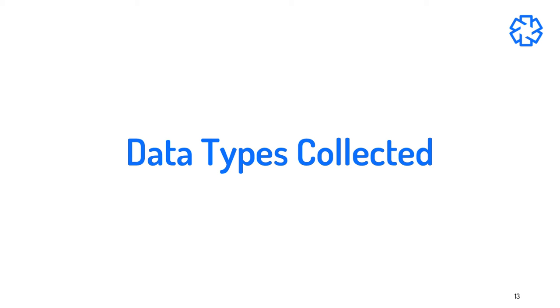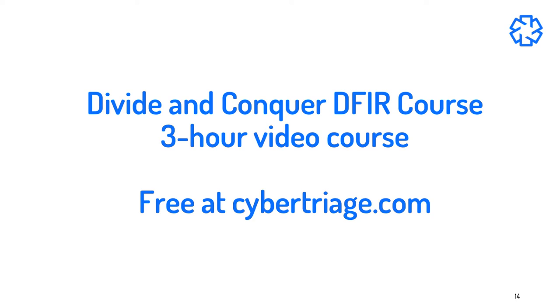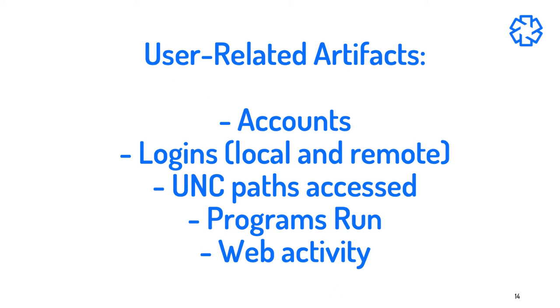It's critical for a responder to know what kinds of data are being collected. I'll outline here the broad types of artifact categories that you'll see in the UI and the collection tool. These are all based on our free DFIR divide and conquer course that you can sign up for on Cybertriage.com. First, we have data around users to detect account compromise. We'll collect what accounts existed or referenced on the system, inbound, outbound, and local login sessions, UNC paths that were accessed or mounted, programs that were run on the host, and web history, downloads, and cookies that could help look at phishing attacks.